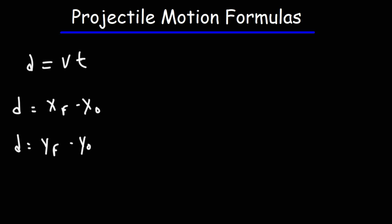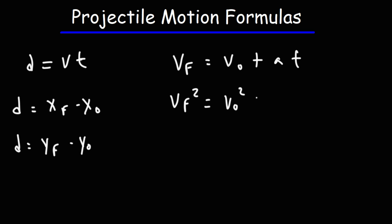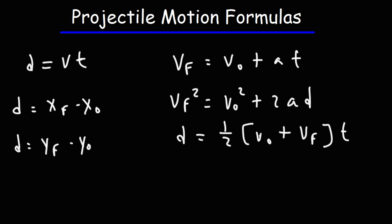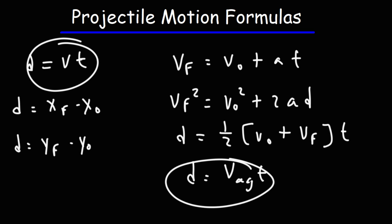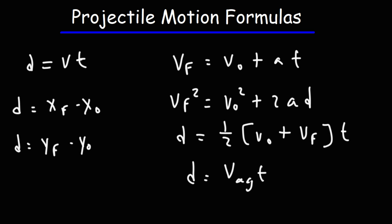Whenever you have an object moving with constant acceleration, you have these equations. Final velocity equals the initial velocity plus at, acceleration multiplied by time. You also have v_final squared equal to v_initial squared plus 2ad. And displacement is equal to one half times the initial velocity plus the final velocity times t — basically average velocity times t. Displacement is also equal to v_initial·t plus one half at squared.